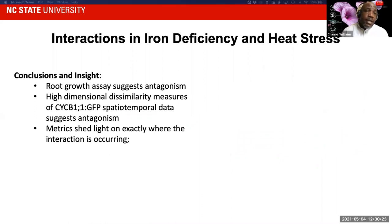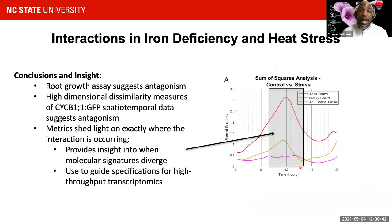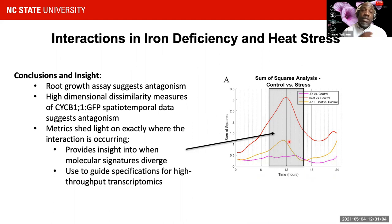We concluded that the root growth assay suggests antagonism between the corresponding stresses, and high-dimensional dissimilarity measures of Cyclin B1;1 spatial-temporal data support this antagonism. We were able to identify specific time points where the differential was maximum — specifically over about the seven-hour to fifteen-hour period. This window really serves as a primary candidate window for taking RNA-seq measurements to elucidate and identify the underlying mechanisms contributing to this difference in overall impact of the combinatorial stress.